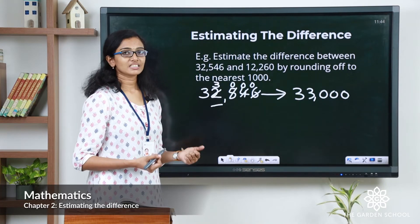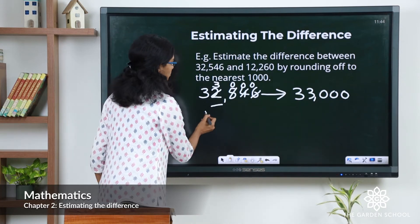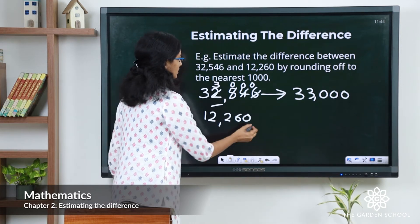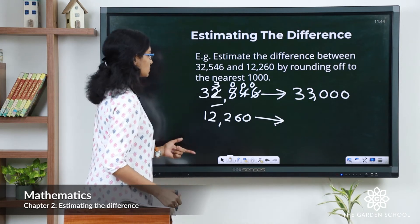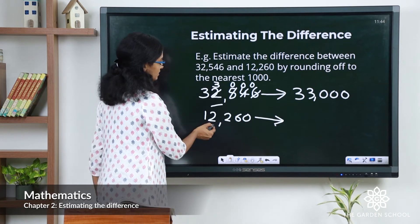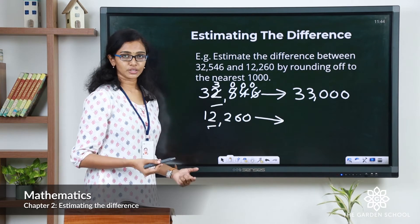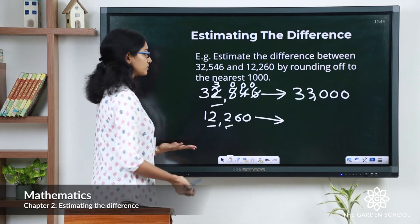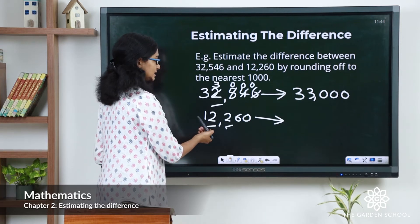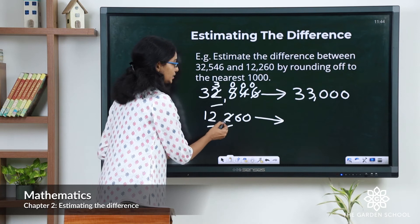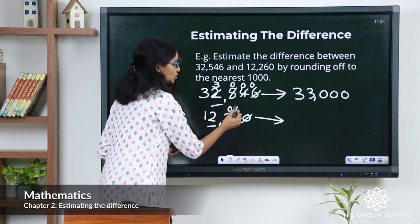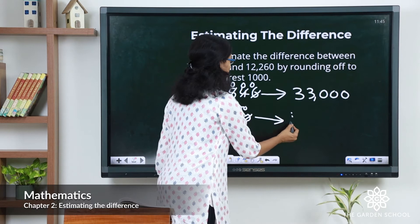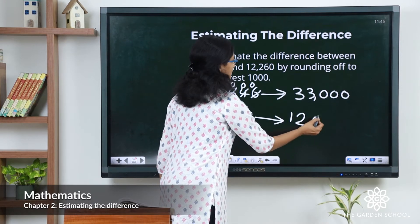Now the subtrahend is 12,260. The rounding digit is 2, and the digit to the right of it is 2, which is less than 5. So let's keep the rounding digit as it is and change the hundreds, tens, and ones to zeros. That gives you the rounded value 12,000.